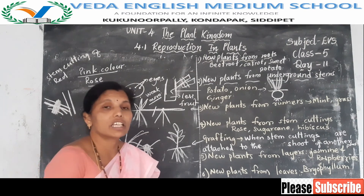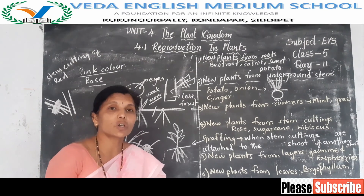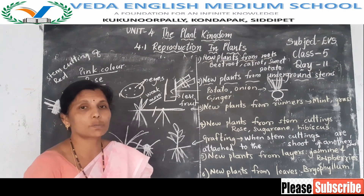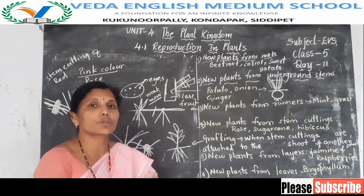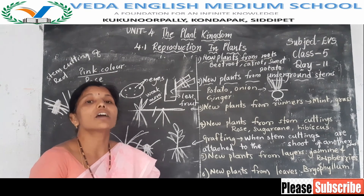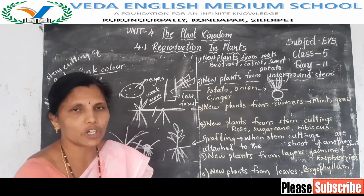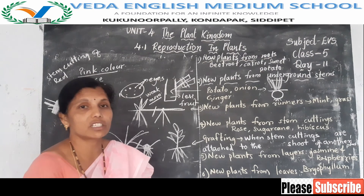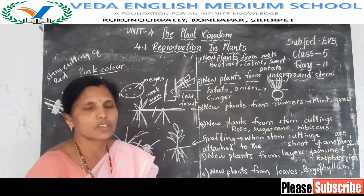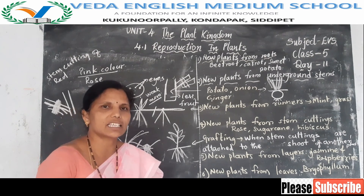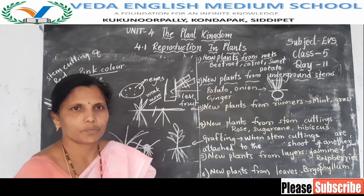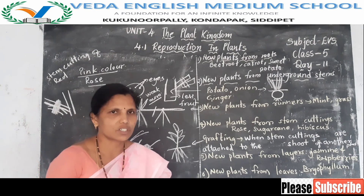Some plants reproduce through roots, leaves, and stems — this is called vegetative propagation or vegetative reproduction. Some plants reproduce through seeds — that is called sexual reproduction.